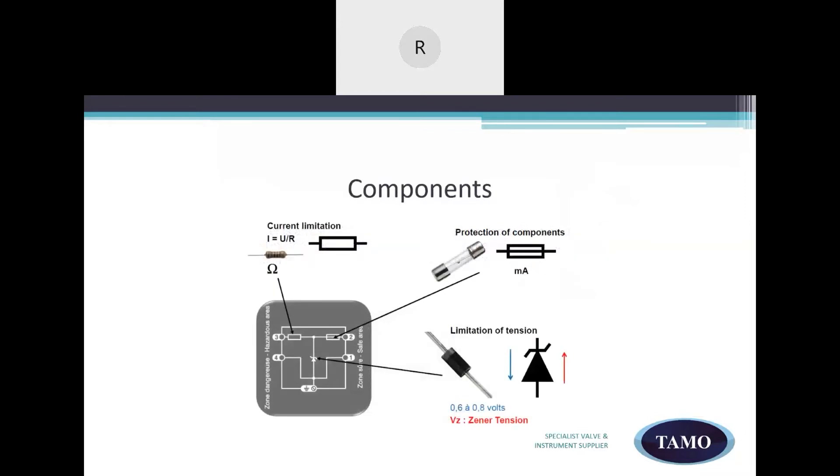The components. The Zeno barrier consists of the following components: a Zeno diode to limit the voltage, resistors to limit the current, and fuses to protect the components.